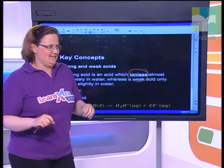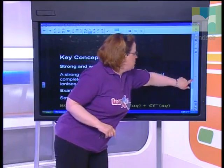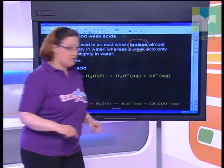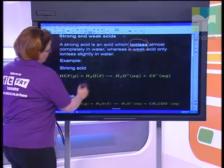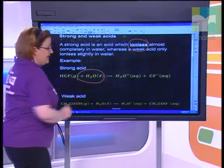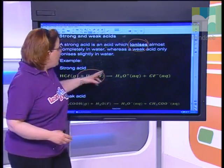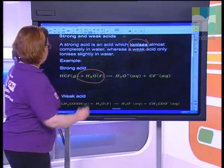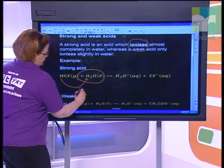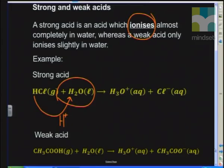With a strong acid, it desperately wants to become ions. When we look at hydrochloric acid reacting with water — and importantly, water is part of the reaction — we end up with H3O⁺ ions. The hydrochloric acid gives its hydrogen away, acting as a proton donor. The water acts as a base, taking the hydrogen, giving us H3O⁺ and Cl⁻.